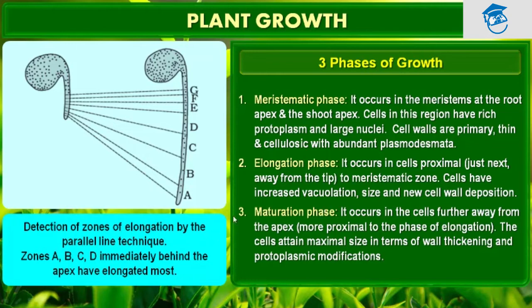Then comes the maturation phase. It occurs in cells further away from the apex, more proximal to the phase of elongation. The cells attain maximal size in terms of wall thickening and protoplasmic modification. Detection of the zone of elongation by the parallel line technique has been done here.